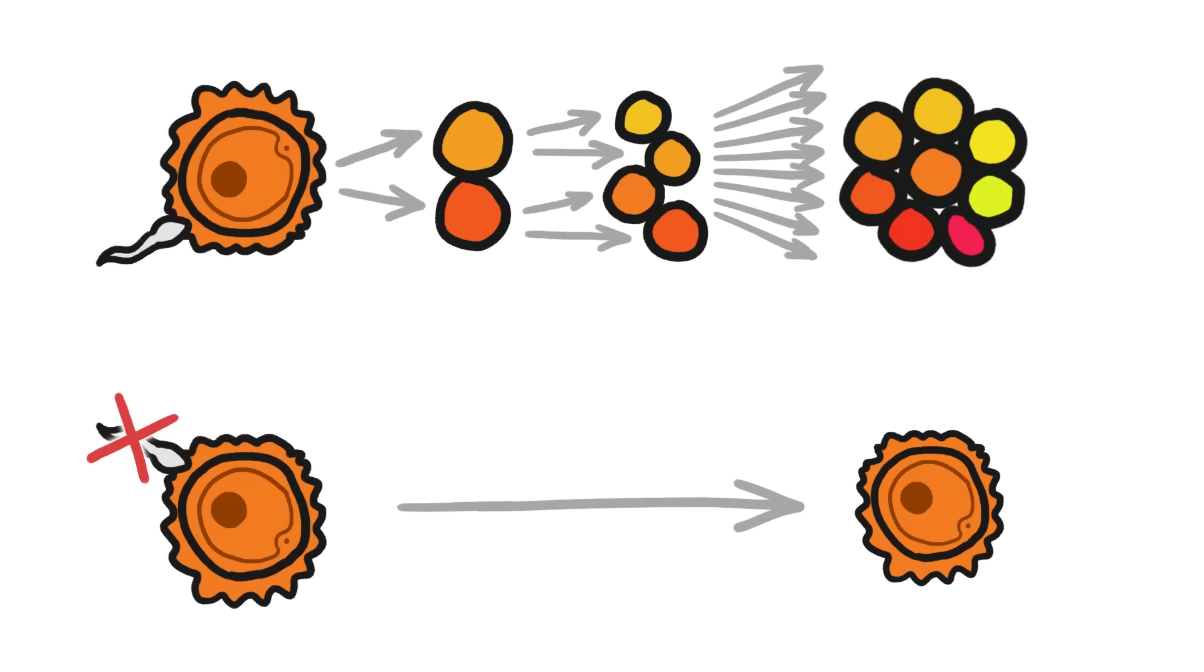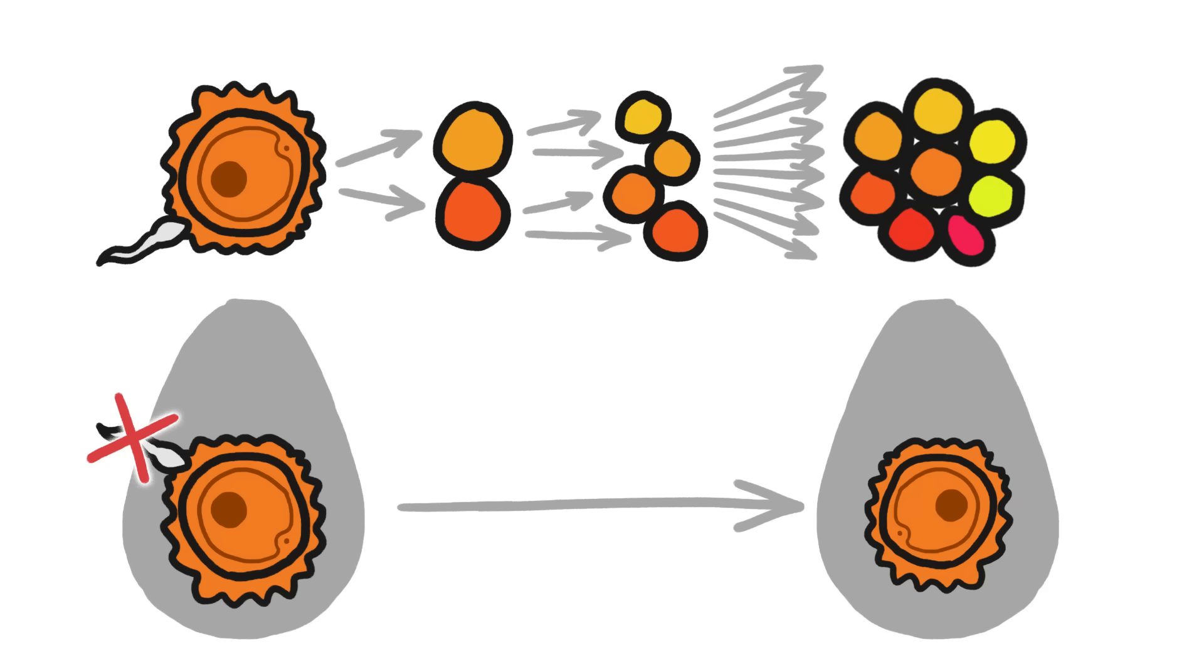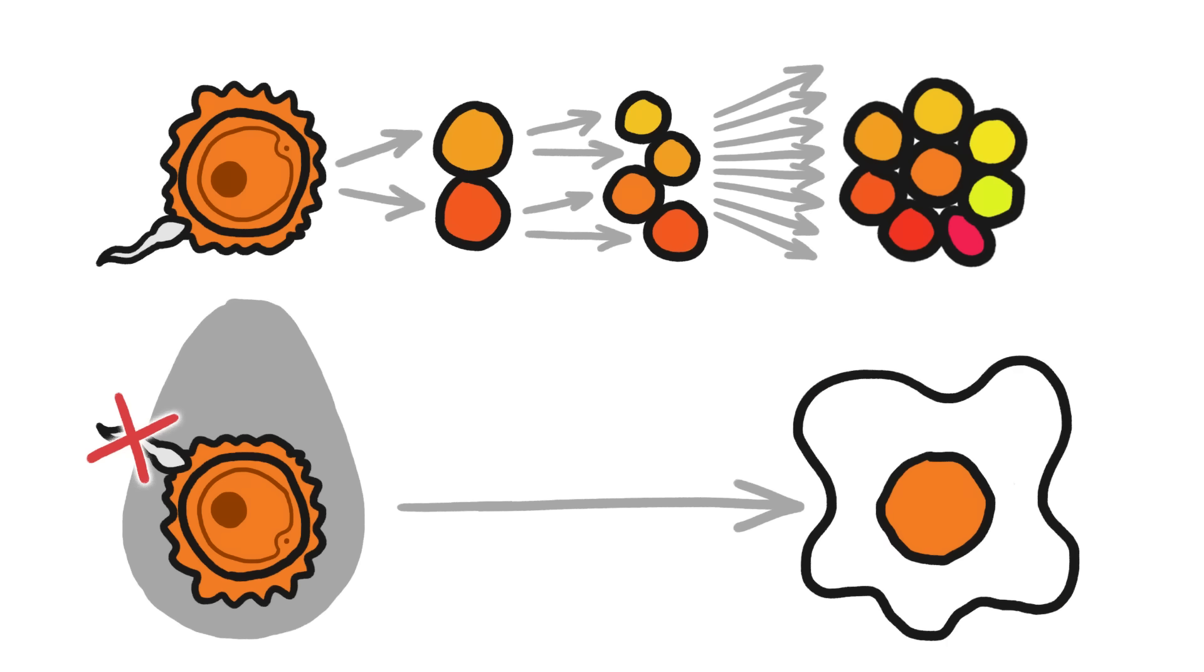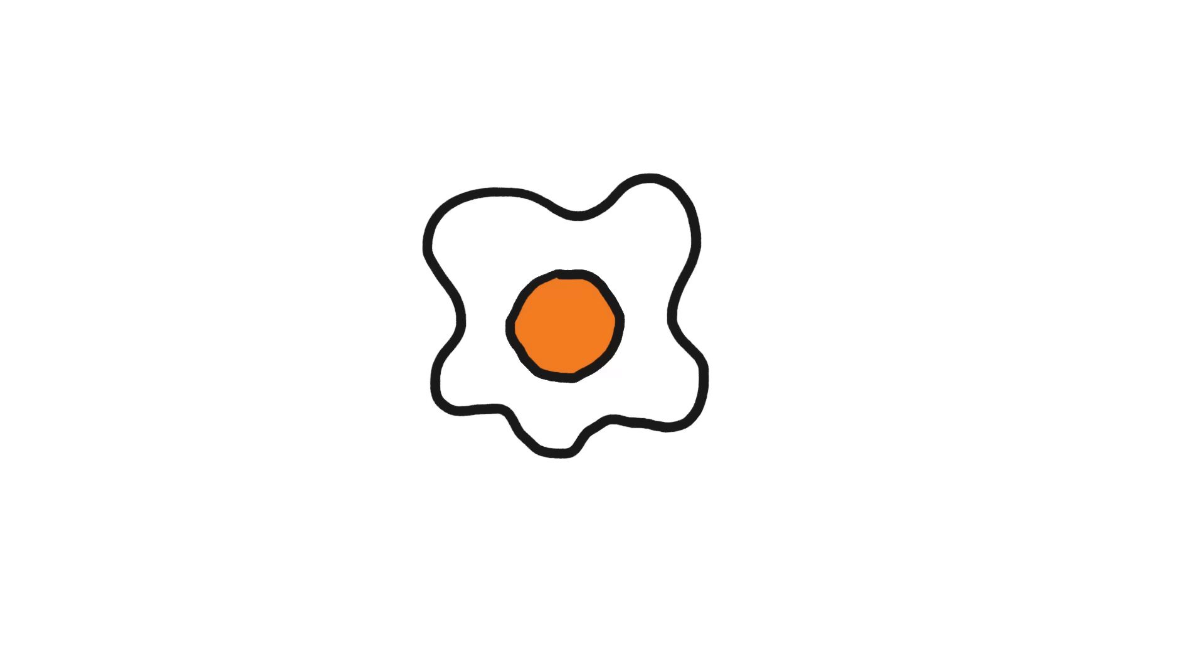In most animals, an unfertilized egg will just get reabsorbed by the mom's body. But for animals that make those super-big egg cells — like birds — it's easier to just lay an unfertilized egg than reabsorb the whole thing. It ends up as a single giant cell — in a shell — a glorious golden blob that might not make a baby, but does make an egg-cellent breakfast.